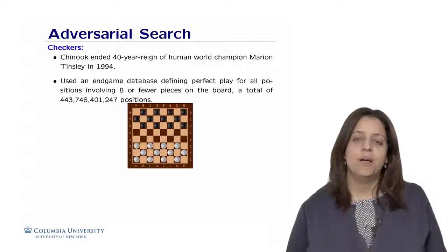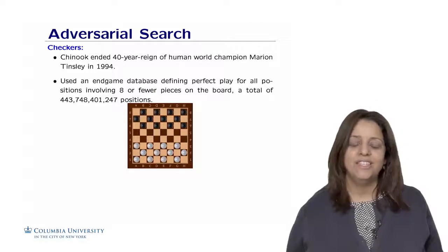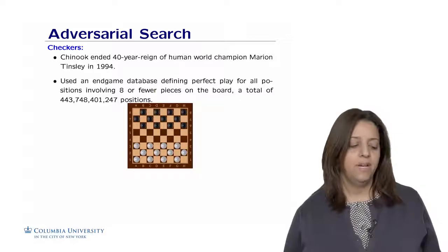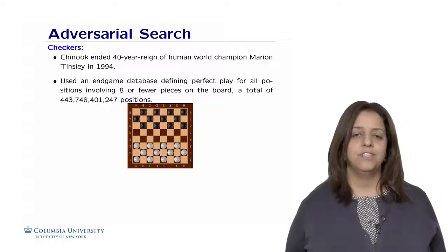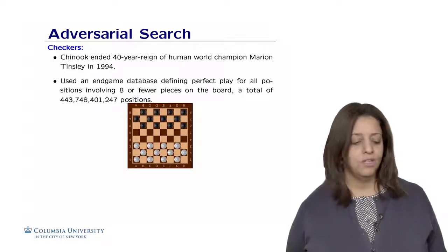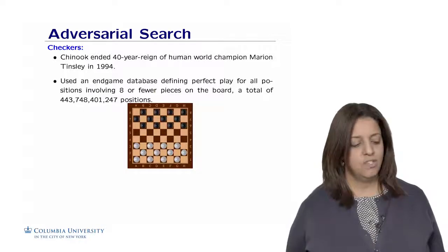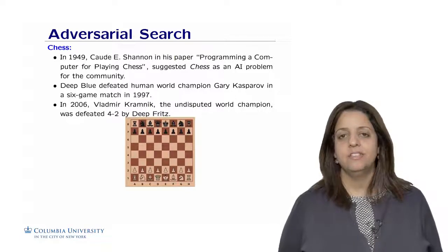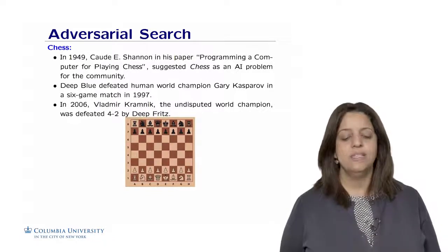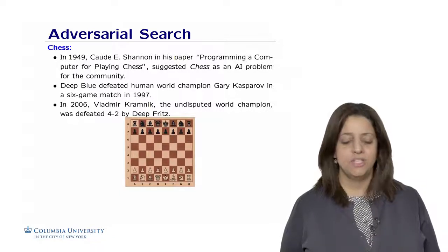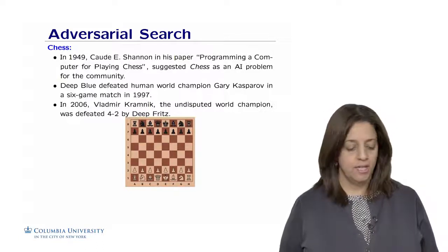Historically, there have been several attempts to solve complex games. For checkers, in 1994, the system Chinook ended the 40-year reign of human world champion Marion Tinsley. Checkers was considered completely solved, using various search strategies and an endgame database storing perfect play for positions with eight or fewer pieces, about 443 billion positions. Chess attracted most attention from the AI community. Claude Shannon suggested it in his 1949 paper Programming a Computer for Playing Chess, inventing the minimax algorithm and heuristic evaluation functions.